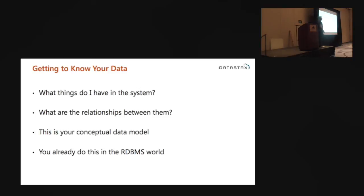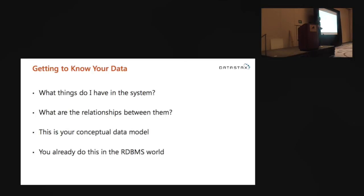The first thing is getting to know your data — what are the things I have in the system, what are the relationships between them? This is also referred to as conceptual data modeling. What are my entities? A lot of times this is entities and relationships between entities. You already do this — if you're doing it in the relational database, keep doing it. There's no reason why you shouldn't think through what things you have in your system and how they'll relate to each other.